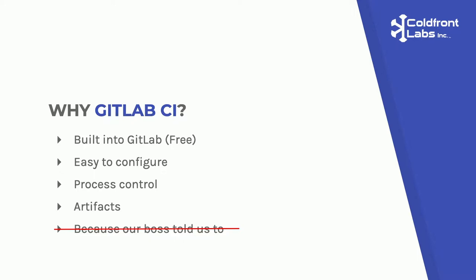GitLab CI also offers really good process control. You can run individual pipelines without necessarily making code changes — you can go through the GitLab UI, go into pipelines, and run things manually. You can also save artifacts to your build. When we run a production deployment, GitLab CI saves a compiled code version of our build — the artifact — so that we can download it later if we need to figure out what went wrong. And, our boss also told us to use it.